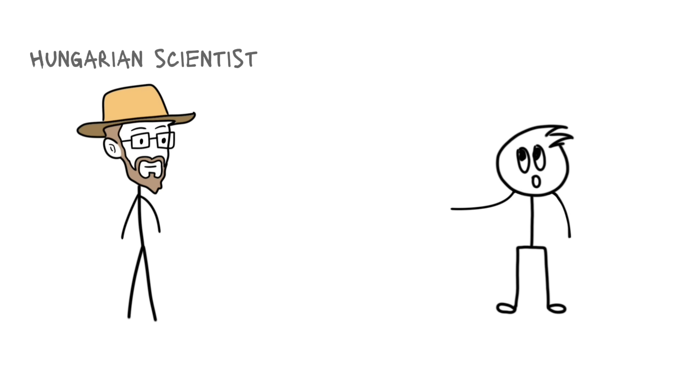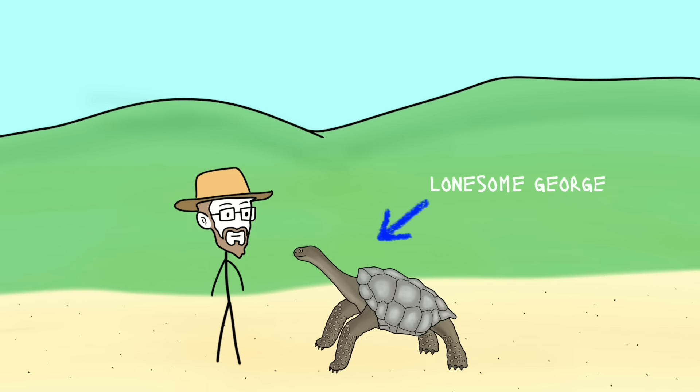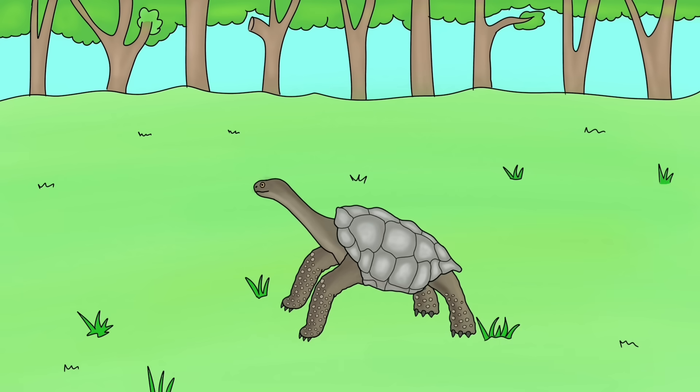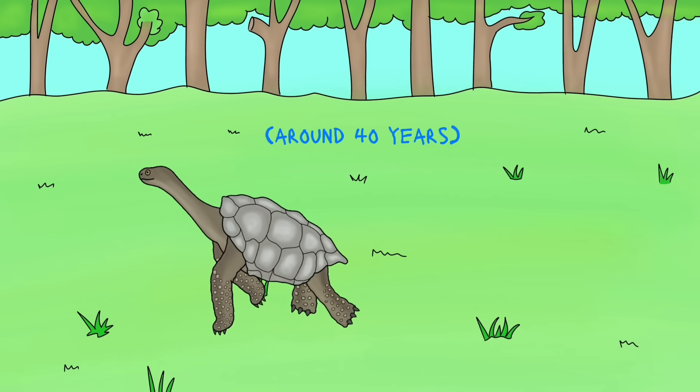But, a Hungarian scientist named Josef Vagvölgyi found him on the island. It sparked a ray of hope. He was instantly taken to Charles Darwin Research Station on Santa Cruz Island for conservation. He lived there for around 40 years.